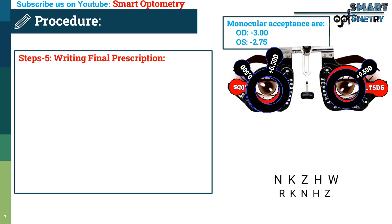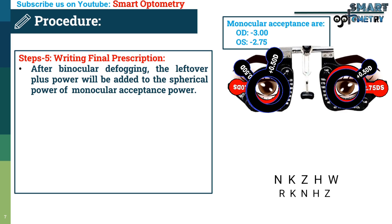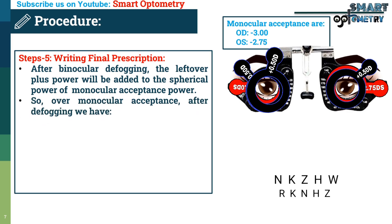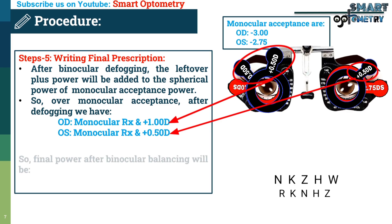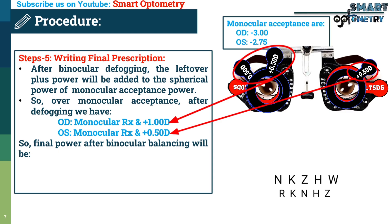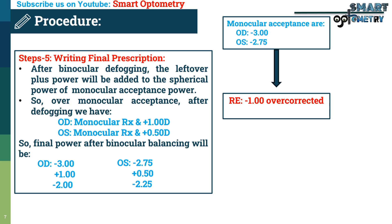Step five — writing the final prescription: after binocular defogging, the leftover plus power is added to the spherical power of the monocular acceptance. Suppose after defogging, the right eye has leftover plus 1 diopter and the left eye has leftover plus 0.5 diopters. Right eye: monocular acceptance minus 3 plus leftover plus 1 = final power minus 2. Left eye: monocular acceptance minus 2.75 plus leftover plus 0.5 = final power minus 2.25. This reveals that the right eye had an overcorrection of minus 1, and the left eye had an overcorrection of minus 0.5 diopters.